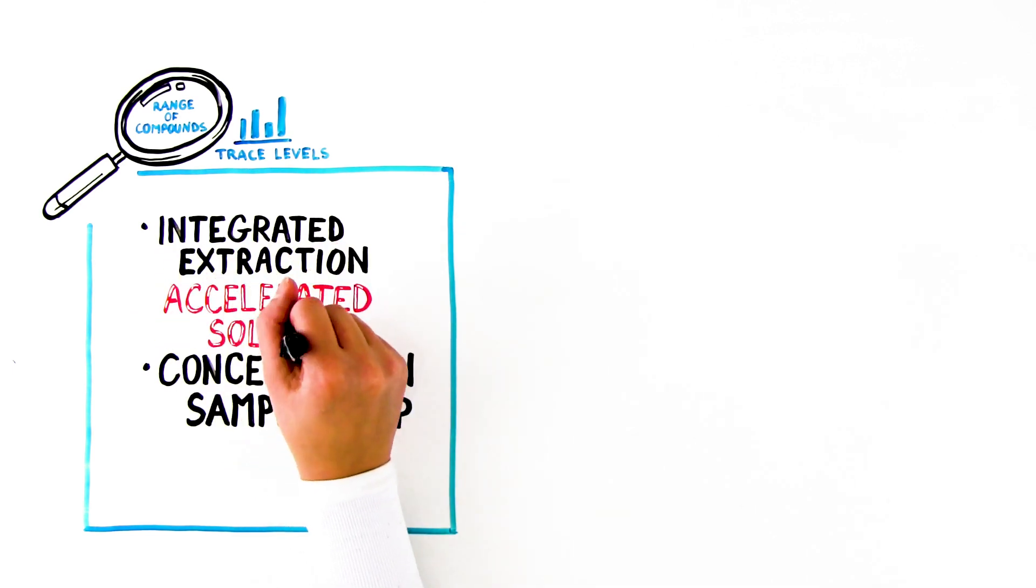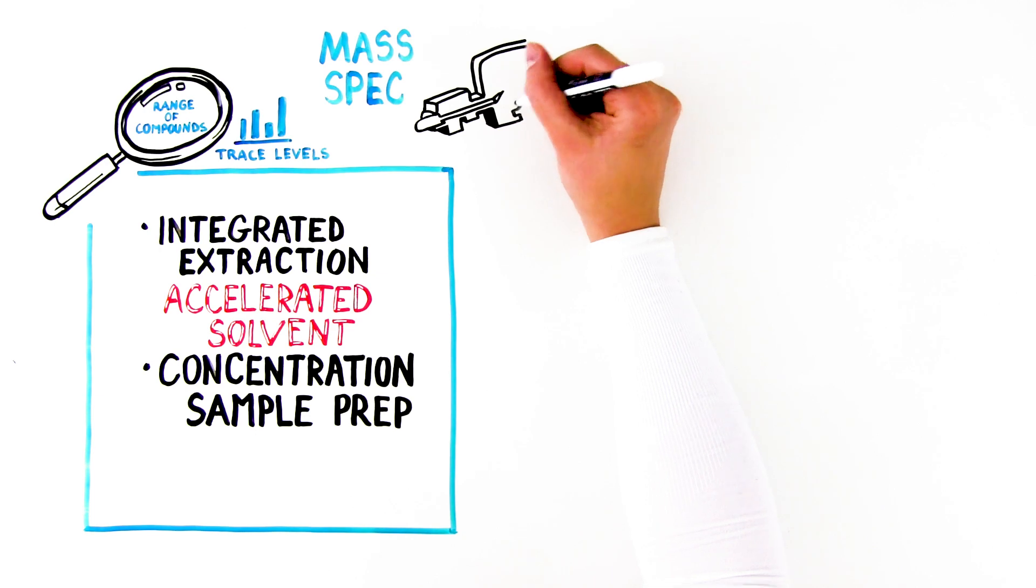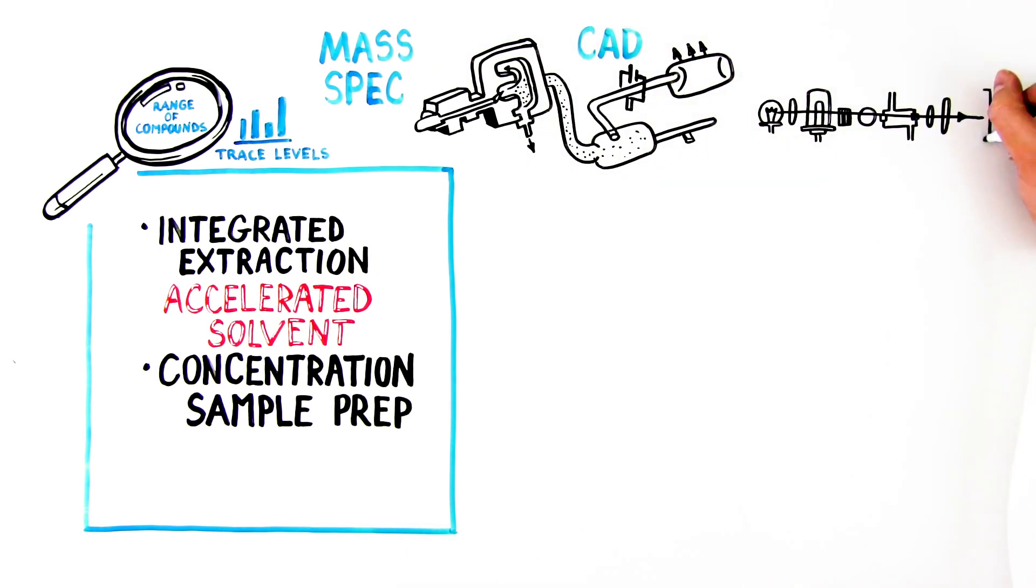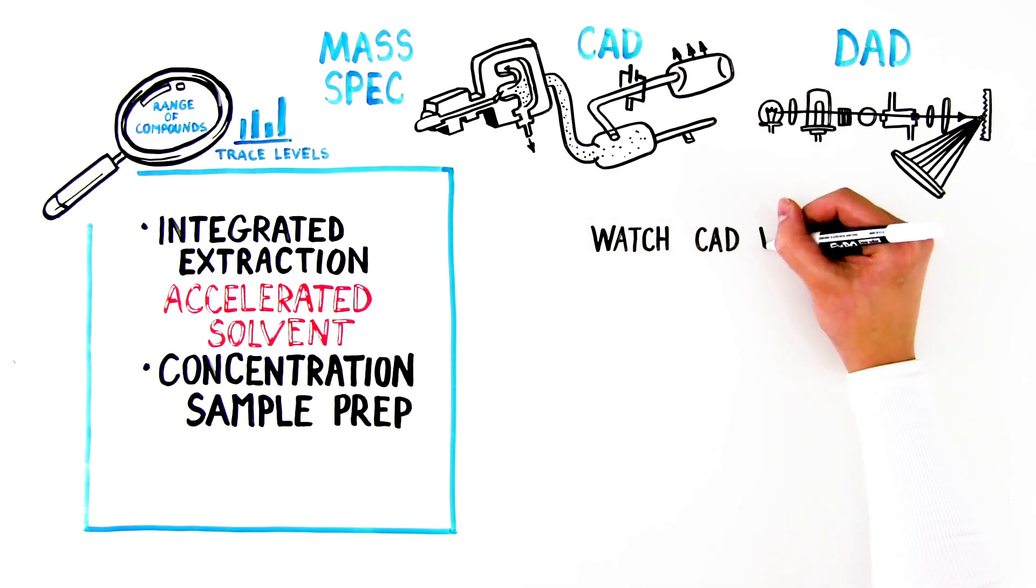with highly efficient chromatography systems and columns, along with sensitive detection techniques such as mass spectrometry, charged aerosol detection (CAD), and diode array detector (DAD), you can be confident extractables will be found where they're present.